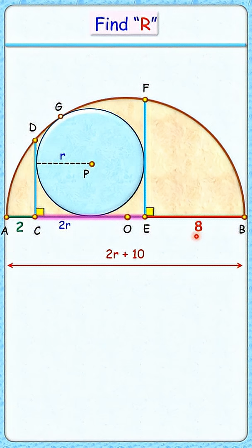We can say the radius of the brown circle will be half of it, or r plus 5 centimeters.